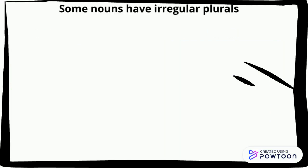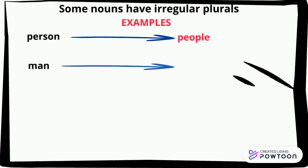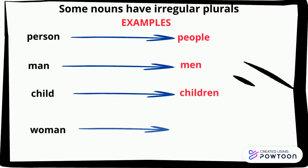Some nouns have irregular plurals. Examples: person becomes people, man becomes men, child becomes children, woman becomes women.